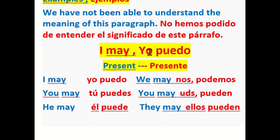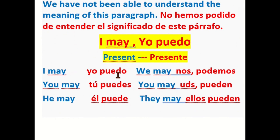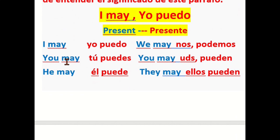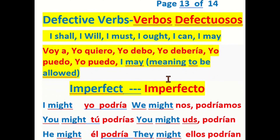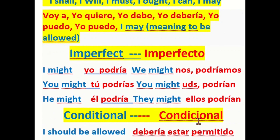And then we move on to the verb I may — yo puedo, meaning to be allowed. I may — yo puedo; you may — tú puedes; he may — él puede; we may — nosotros podemos; you may — ustedes pueden; they may — ellos pueden. And the imperfect of this verb, meaning to be allowed: I might — yo podría; you might — tú podrías; he might — él podría; we might — nosotros podríamos; you might — ustedes podrían; they might — ellos podrían.